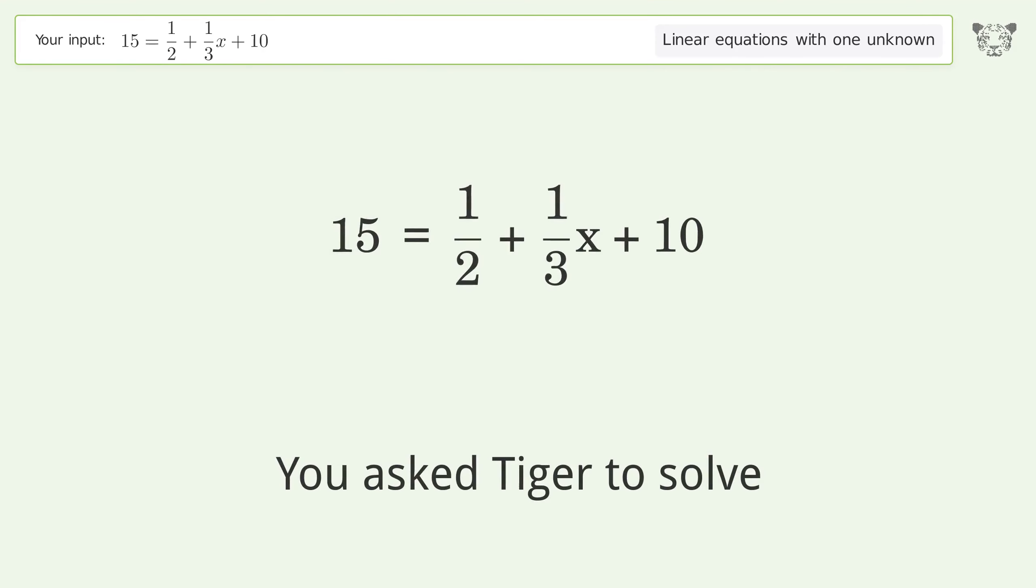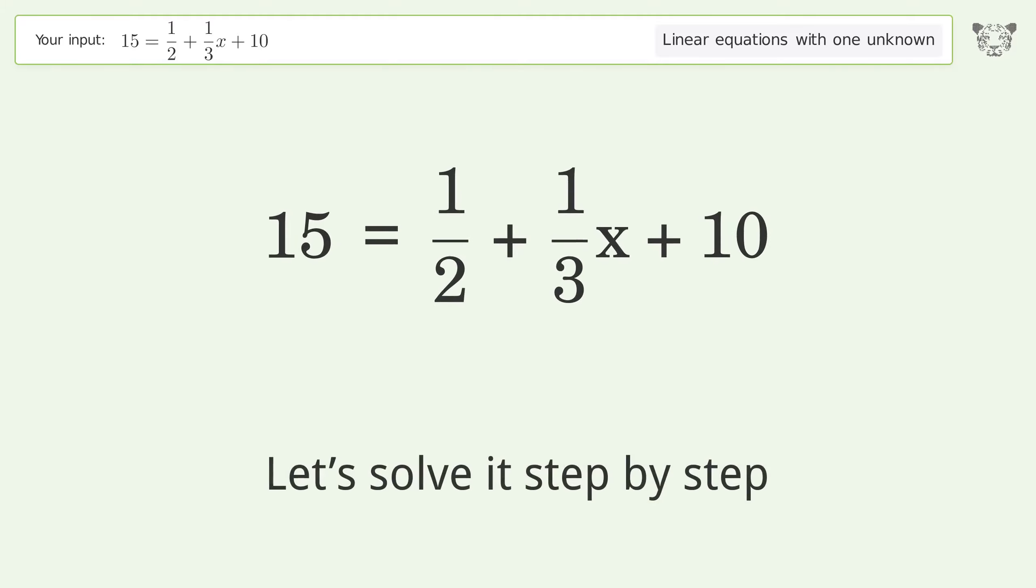You asked Tiger to solve this. This deals with linear equations with one unknown. The final result is x equals 27 over 2. Let's solve it step by step. Simplify the expression. Group like terms.